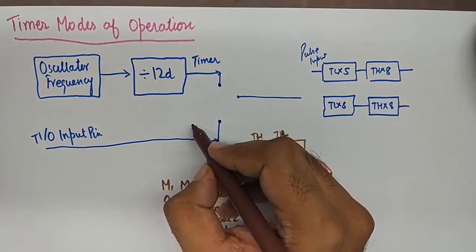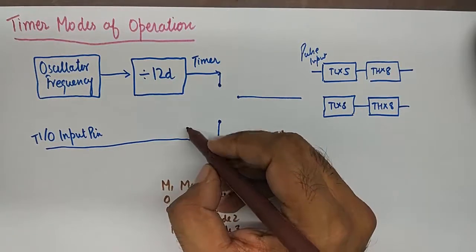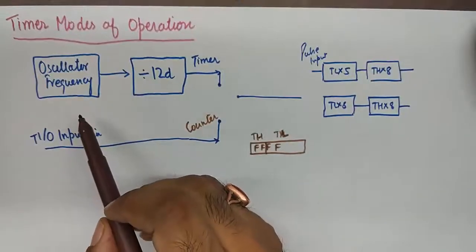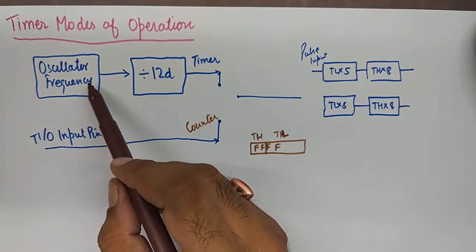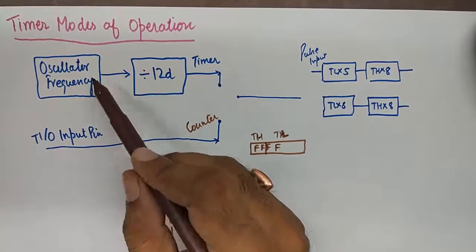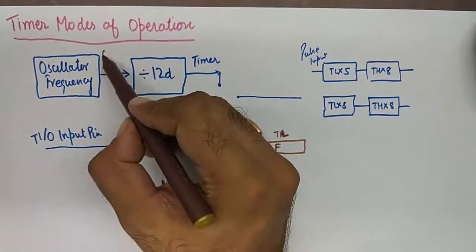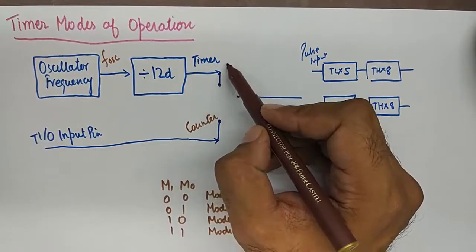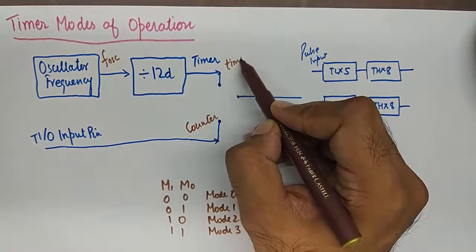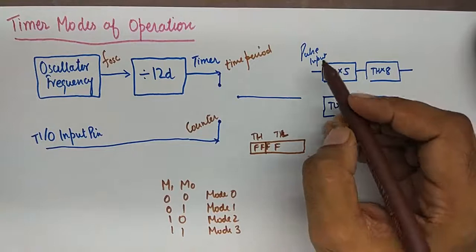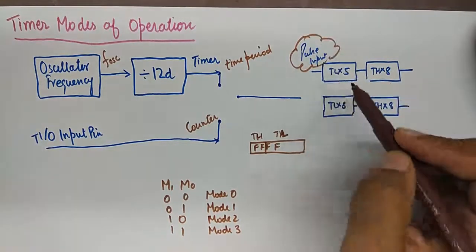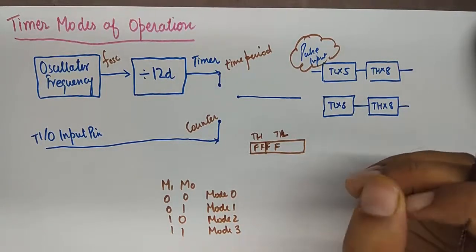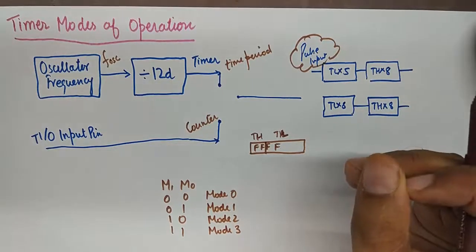There are two modes in which timer counter operates. One is timer mode, the other one is counter. As we can see, the timer mode takes its increment time from oscillator frequency. Whatever the oscillator frequency you are connected to is divided by 12, and that time period becomes the pulse input of the timer. And with that pulse duration it will start incrementing the number.